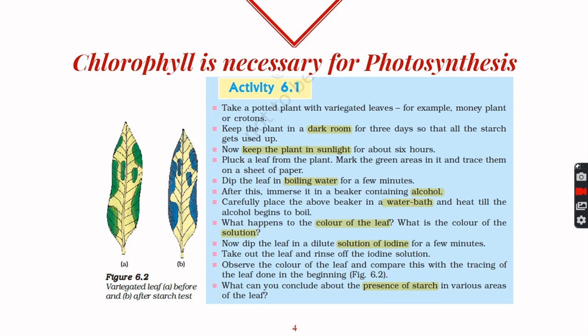After three days the plant is taken out and kept under sunlight for at least three hours. We will then pluck a leaf from this plant, trace it on paper, and mark all the green areas present inside this leaf. After that, we put the leaf in boiling water for a few minutes to remove the outer waxy layer, make the tissue soft, and also to kill the leaf.